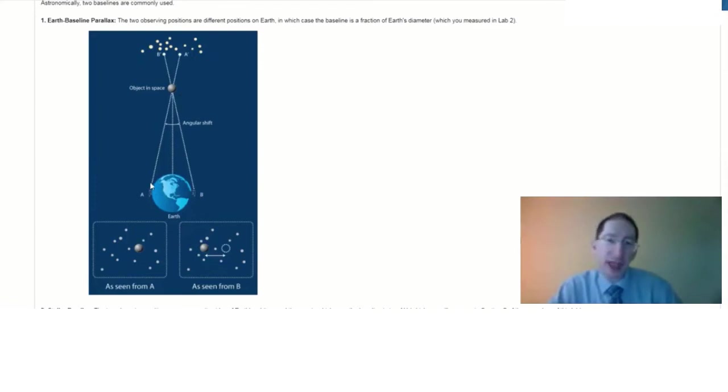The observer at position A sees that object over here, around these background stars, but the observer at position B sees the object shifted over here, around these background stars. If you can measure the angular shift between these two positions and combine that with the physical distance between these two observing points, you can calculate the distance to this object.